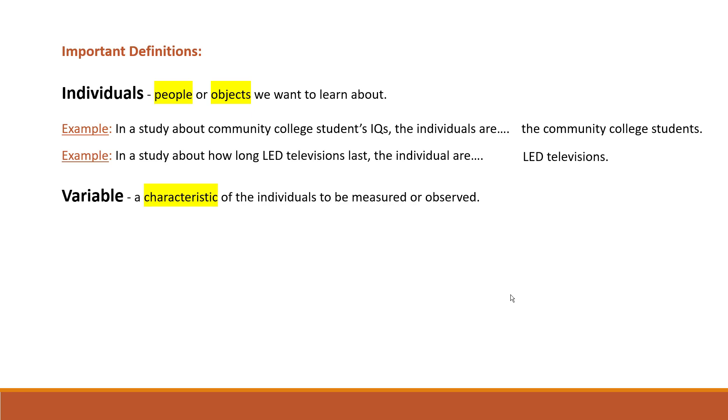And the point is that for different individuals, that same characteristic can be different. For example, eye color. That is a variable because eye color varies from person to person. And our next example suggests that we come up with different variables ourselves. So, in a study of community college students, variables might be...